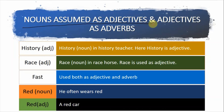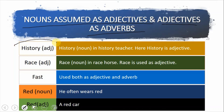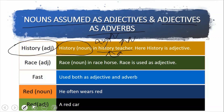Nouns assumed as adjectives and adjectives as adverbs — یعنی کون سے nouns ہیں جو adjectives کے طور پر بھی use ہوتے ہیں۔ مثلاً history: a history teacher میں teacher as a noun use ہوتا ہے اور history as an adjective — یعنی history کے teacher۔ اکیلا history بطور noun ہے۔ اسی طرح race: a race horse میں horse noun ہے اور race adjective ہے۔